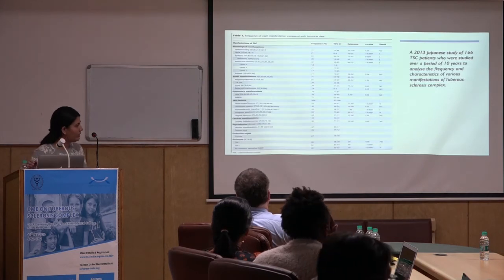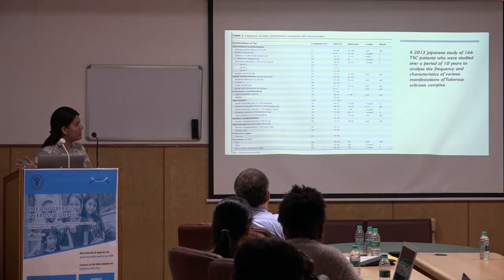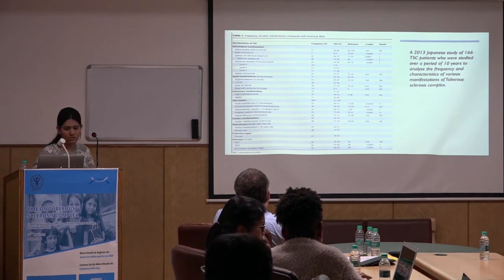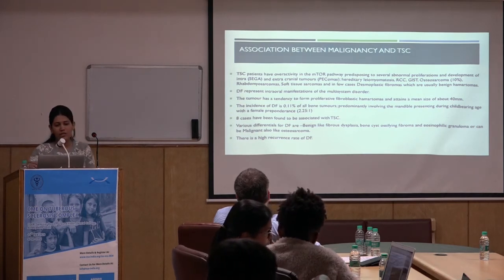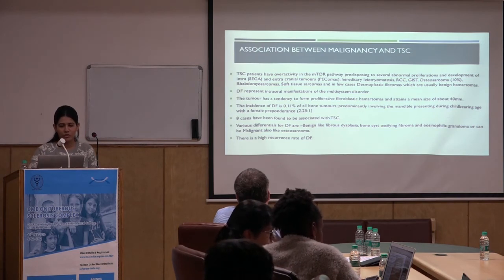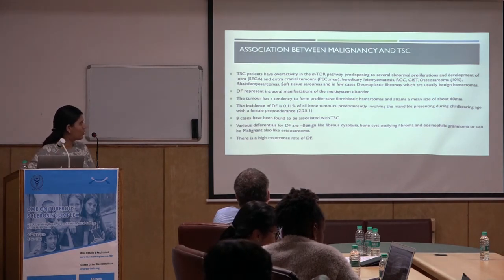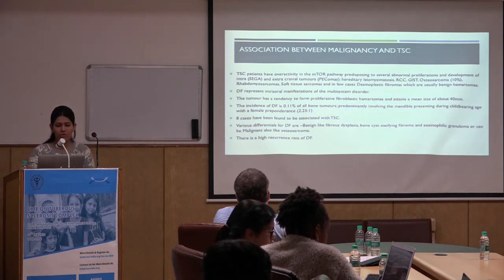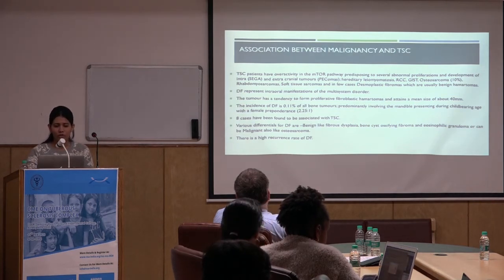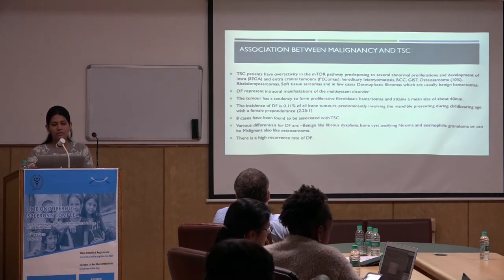This is a Japanese study carried out in 2013 over the course of ten years, during which they studied around 166 tuberous sclerosis patients for the frequency and characteristics of various manifestations. Tuberous sclerosis is a disorder in which hamartomas or benign tumours are commonly associated due to the effect on the mTOR pathway. They can be rhabdomyomas or subependymal giant cell astrocytomas, but there can be some cases of malignancies also. Desmoplastic fibroma, which is an intraosseous manifestation of this disorder, was seen in our patient. The tumour has a tendency to form proliferative fibroblastic hamartomas, with a mean size of around 40 mm, which is almost half the size of the tumour we resected.